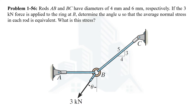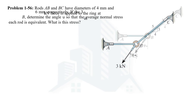Hello everyone. In this video we are going to solve problem 56 from the chapter of stress in the book of Mechanics of Materials by R.C. Hubbard. In this example, we have been asked to calculate the theta angle which this 3 kN force is making with the vertical, and it is given to us that the stresses in these two rods are equal. So let's solve this example.